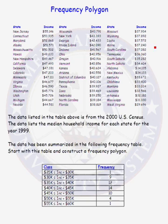The data that we will use to construct our frequency polygon consists of the following. The data comes from the 2000 U.S. Census. The data lists the median household income for each state in the United States and the District of Columbia in the year 1999.